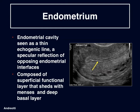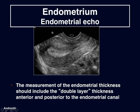Moving on to the endometrium. The endometrial cavity is seen as a thin echogenic line — a specular reflection of the opposing endometrial interfaces. The endometrium is composed of the superficial functional layer that sheds with menses, and a deep basal layer on either side of the endometrial cavity. The measurement of the endometrial thickness should include the double layer thickness, anterior and posterior to the endometrial canal, performed in the sagittal plane with the endometrium perpendicular to the direction of the beam for best accuracy. The hypoechoic halo representing the inner layer of the myometrium should not be included in this measurement.